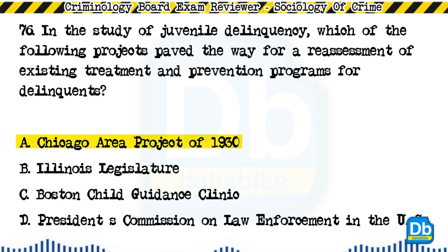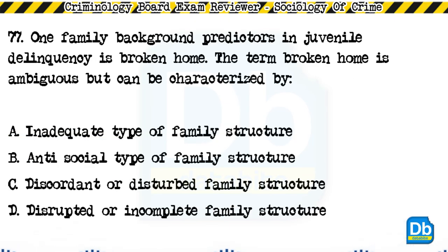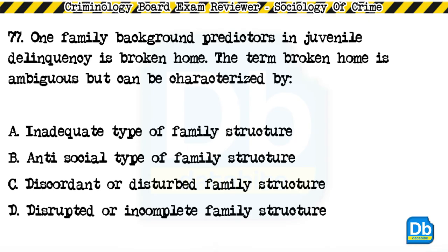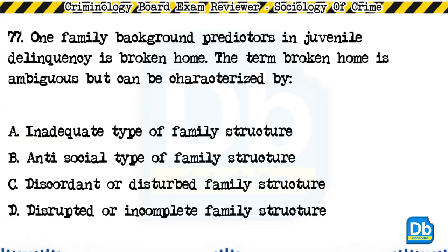Question 77: One family background predictor in juvenile delinquency is broken home. The term broken home is ambiguous but can be characterized by: a) inadequate type of family structure, b) anti-social type of family structure, c) discordant or disturbed family structure, d) disrupted or incomplete family structure. The answer is D, disrupted or incomplete family structure.